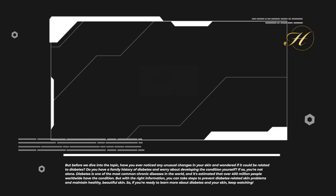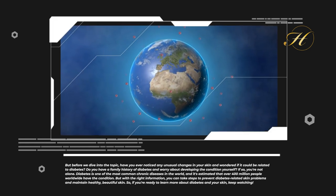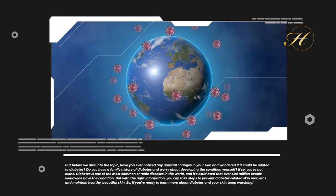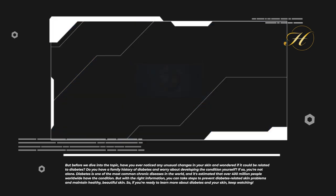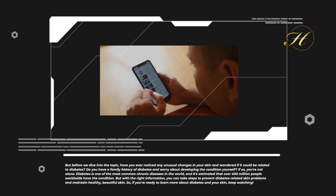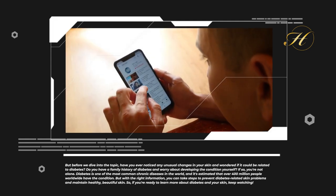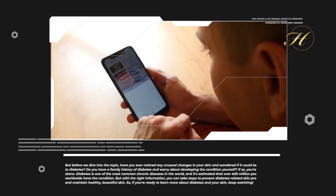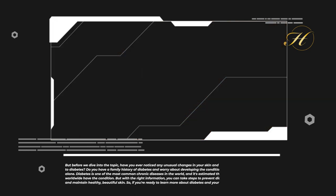Diabetes is one of the most common chronic diseases in the world, and it's estimated that over 400 million people worldwide have the condition. But with the right information, you can take steps to prevent diabetes-related skin problems and maintain healthy, beautiful skin. So if you're ready to learn more about diabetes and your skin, keep watching!